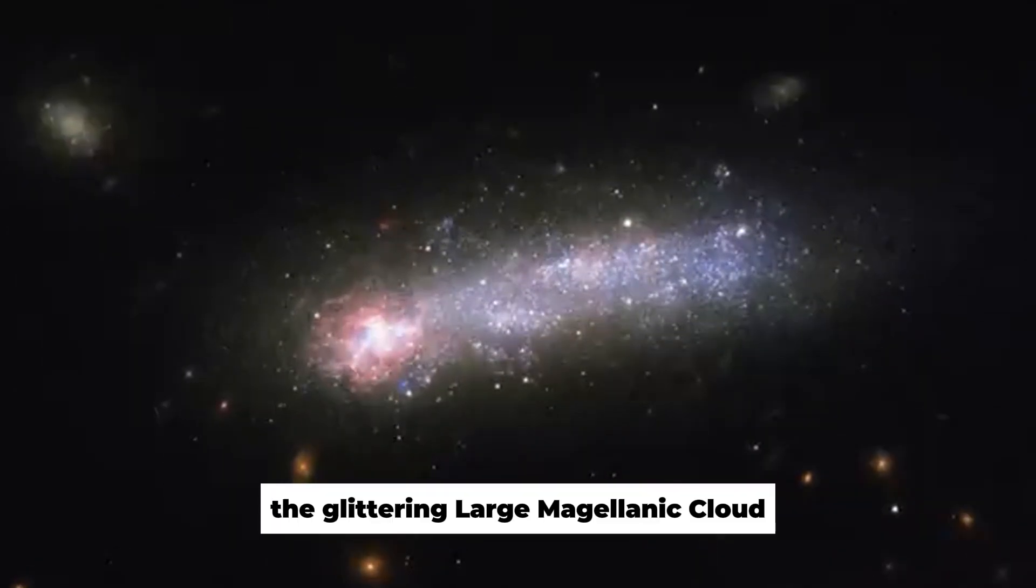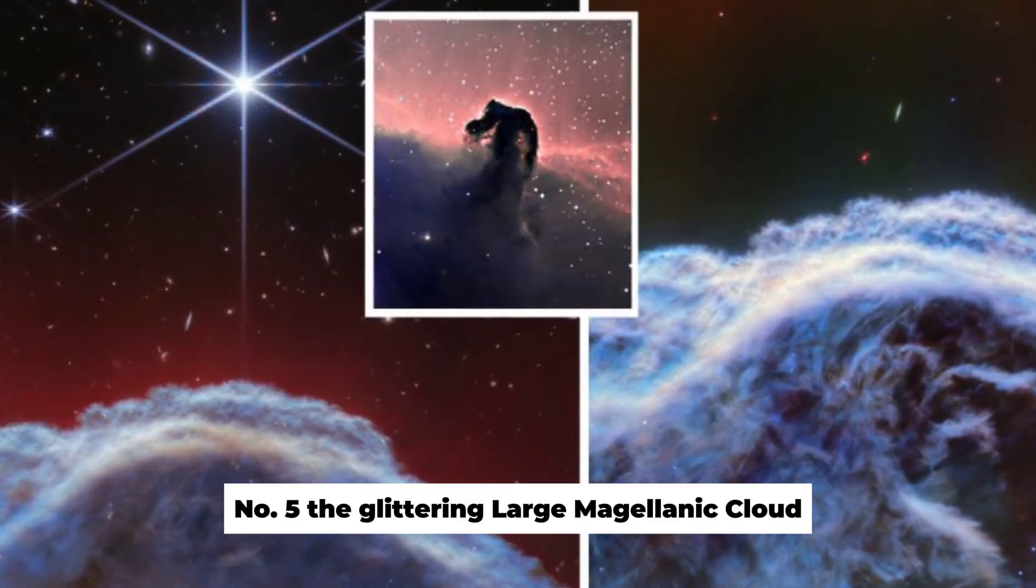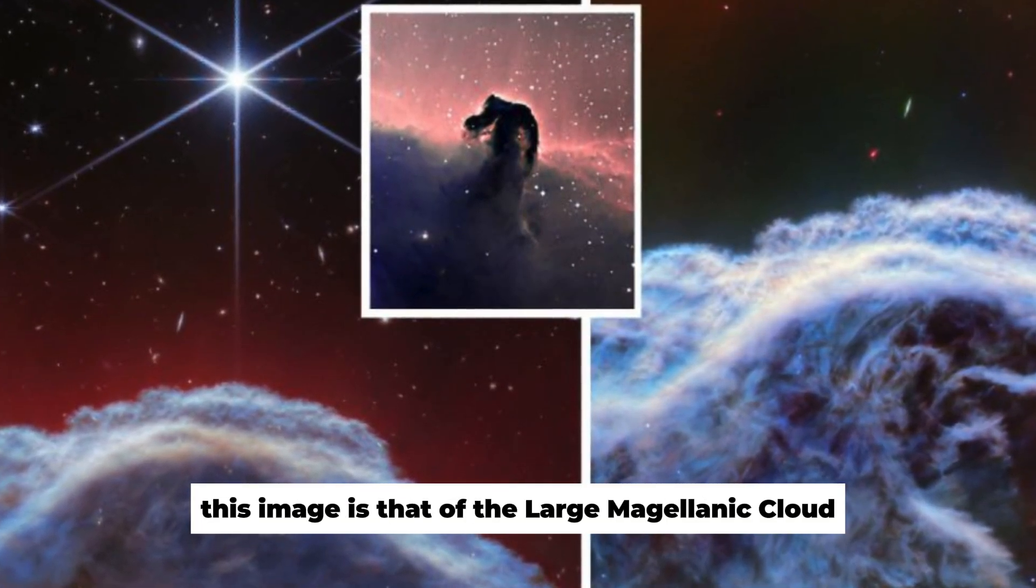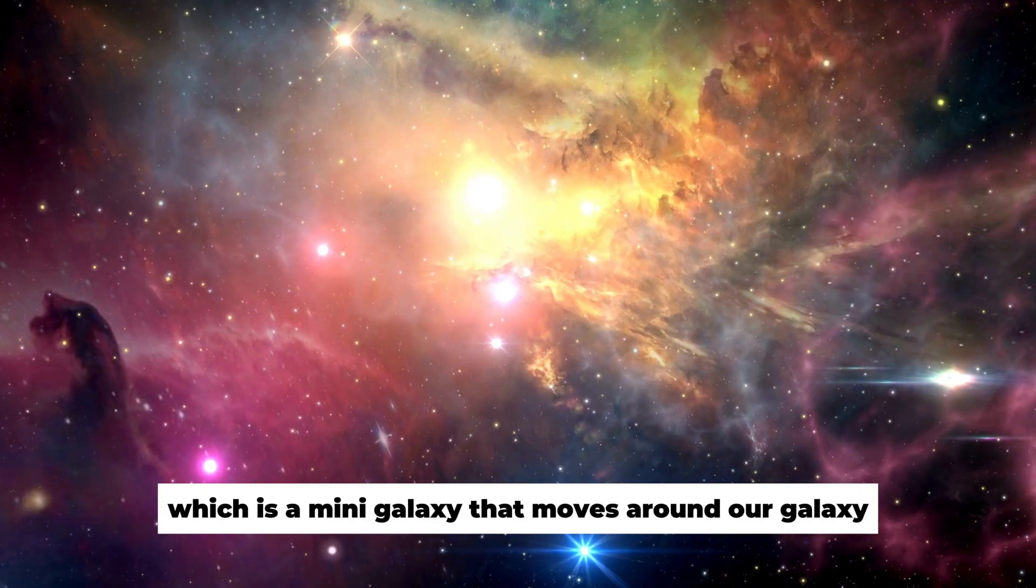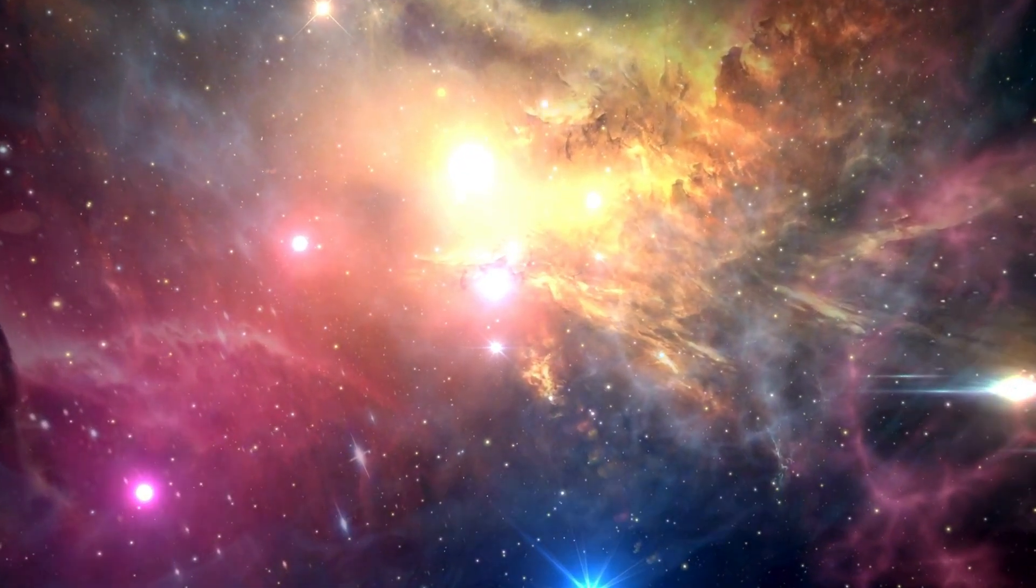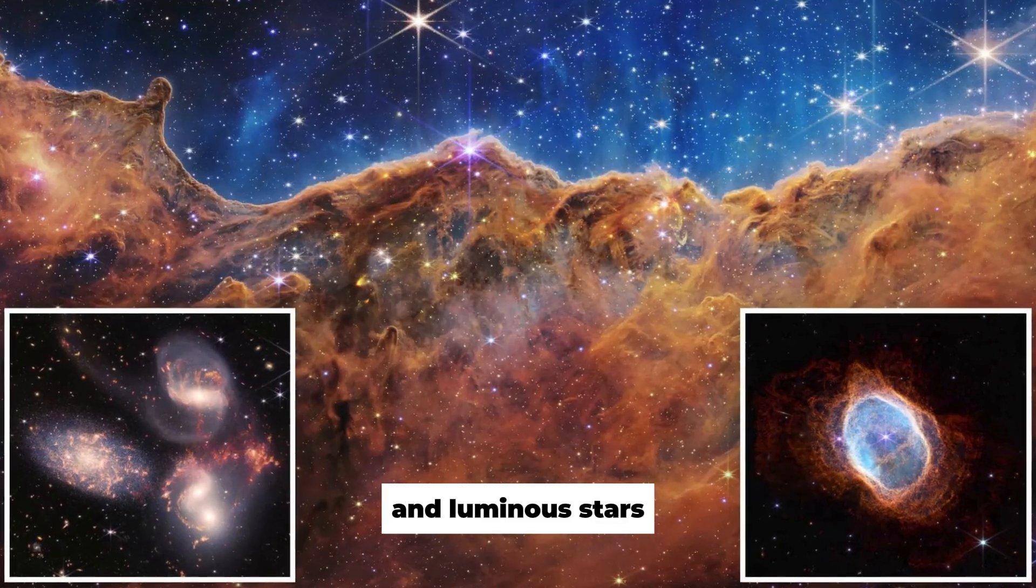Number 5: The Glittering Large Magellanic Cloud. This image is that of the Large Magellanic Cloud, which is a mini-galaxy that moves around our galaxy, the Milky Way. This image gives a clear view of the gas clouds and luminous stars.